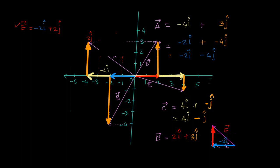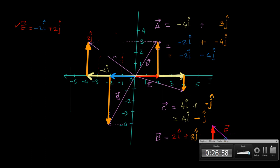Whether you place the vector here or there, its representation always remains the same — it does not change. This is the way in which you resolve a given vector in given directions.